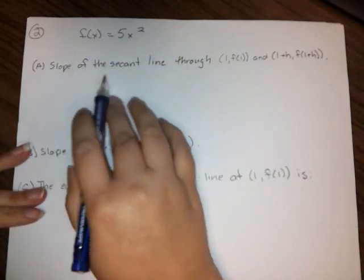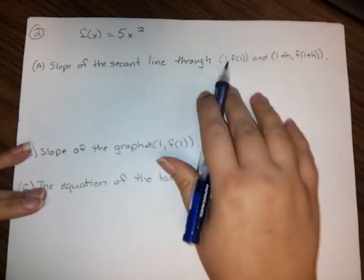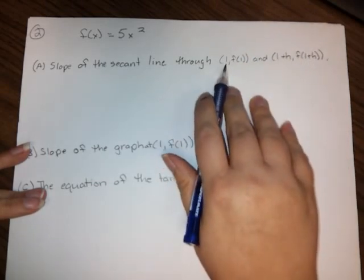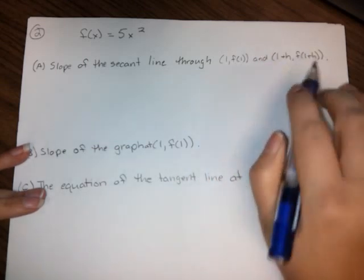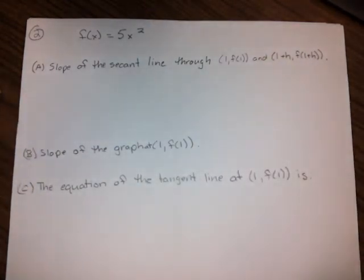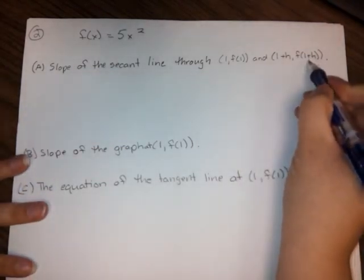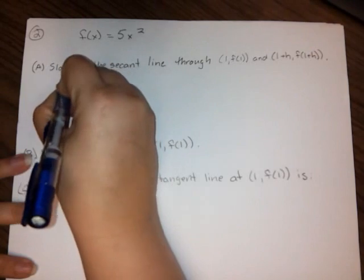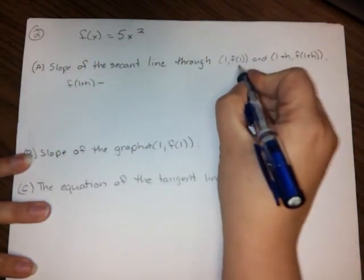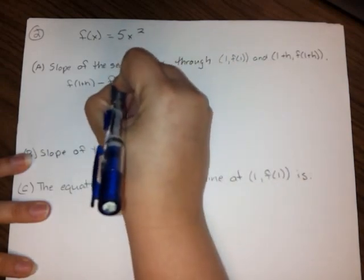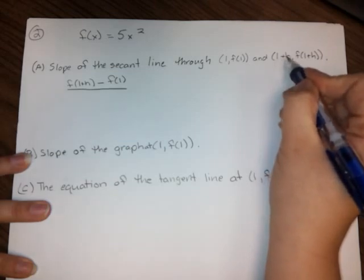They're giving us f of x equals 5x squared. The first thing they want to know is the slope of a secant line through these two points. They're asking for the secant line that's going through (1, f(1)) and (1 plus h, f(1 plus h)). The way that we find the slope of a secant line is we're going to start with the second y value, so f(1 plus h) minus the first y value, f(1), and we're going to put it over the second x value, so 1 plus h minus 1.